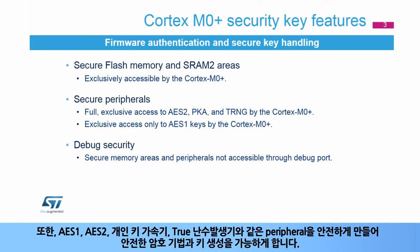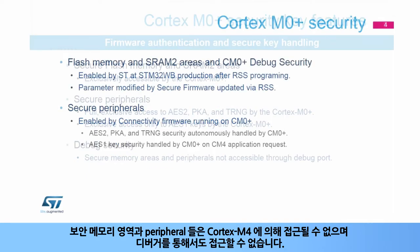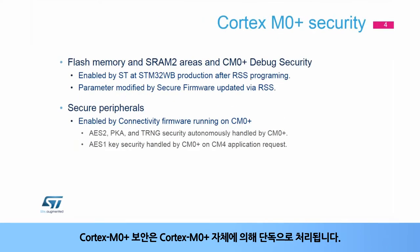Additionally, peripherals such as AES1, AES2, private key accelerator, and true random number generator can be made secure to allow secure cryptography and key generation. The secure memory areas and peripherals are not accessible by the Cortex-M4 and neither through the debugger. The Cortex-M0 Plus Security is completely handled by the Cortex-M0 Plus itself.